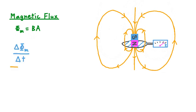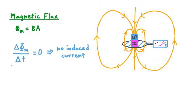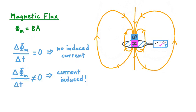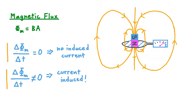Here's what we know so far in terms of magnetic flux and induced current. When the change in magnetic flux over time through the loop was zero — back when our permanent magnet was stationary above the loop — no current was induced in our conductor. But when we dropped our permanent magnet so that it was in motion through our loop, the change in magnetic flux per unit time was not zero, and when that happened, current was indeed induced. It turns out these two findings are described mathematically by a law called Faraday's Law.